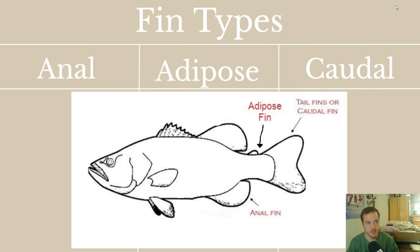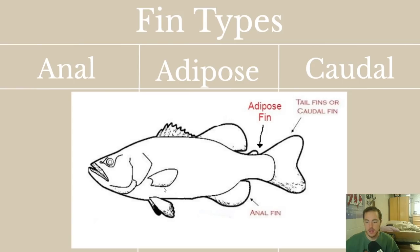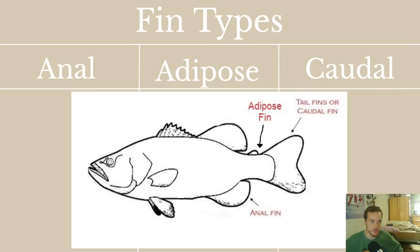The last three fin types are anal, adipose, and caudal. The anal fin is pretty obvious — the anus is on the underside of the fish and the anal fin is right next to it, on the backside of the underside. To distinguish it from the pelvic fin: the pelvic fin is further forward, the anal fin is further back near the anus. Pelvic fins tend to be smaller and thinner, resembling pectoral fins, while anal fins tend to be larger and more spread out.